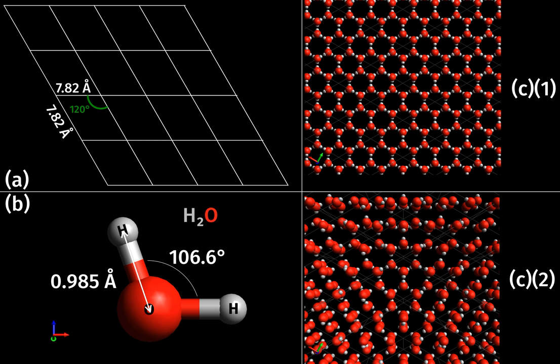Polymorphs have different stabilities and may spontaneously convert from a metastable form, or thermodynamically unstable form, to the stable form at a particular temperature. They also exhibit different melting points, solubilities, and X-ray diffraction patterns.